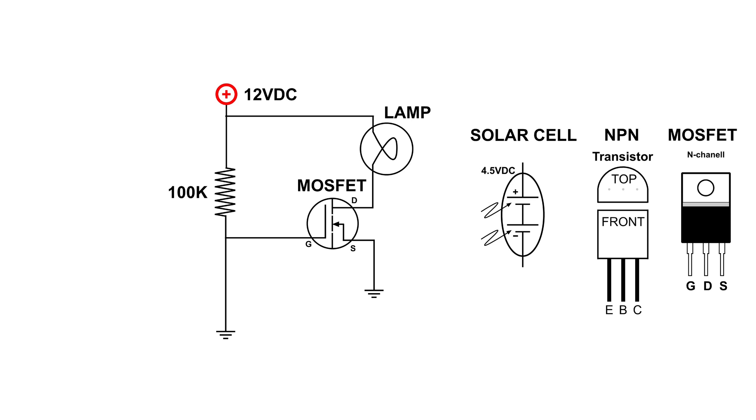And what that means is that NPN transistor might as well just be a wire that goes to ground. And you can see here what that does. It grounds out the gate of the MOSFET, which keeps that light off.